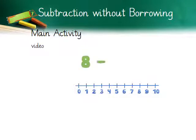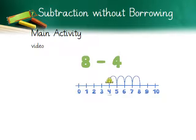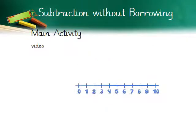8 minus 4 — the frog starts at 8 and then moves 4 places to the left, landing on 4. So 8 minus 4 equals 4.